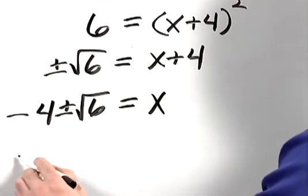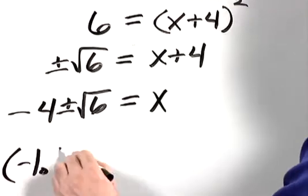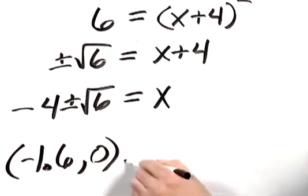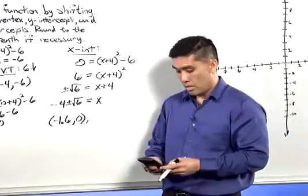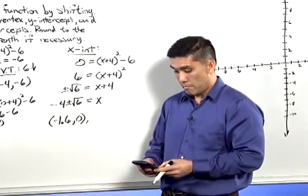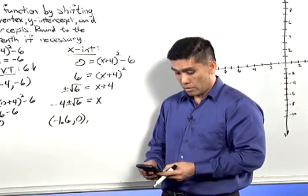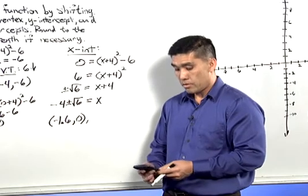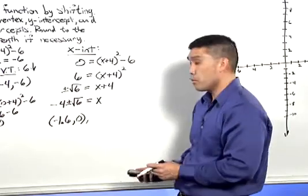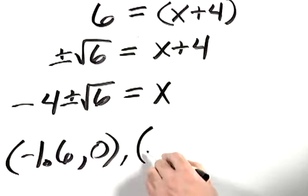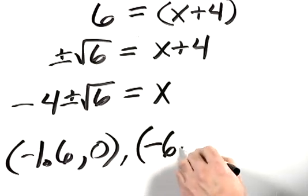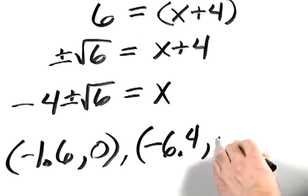The other, negative 4 minus the square root of 6 equals negative 6.4. So the other x-intercept is negative 6.4 comma 0.